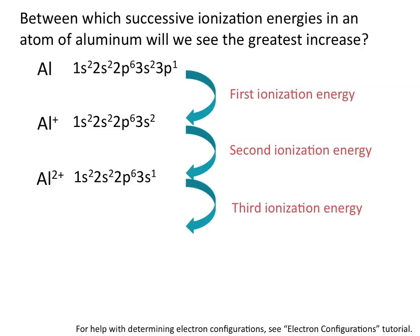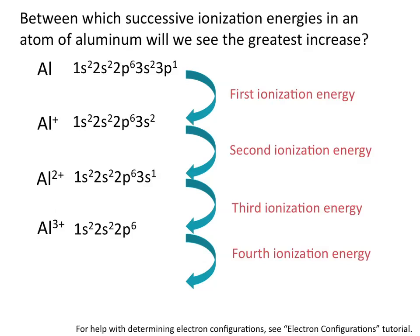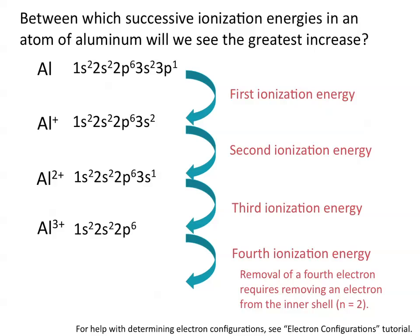The removal of a third electron will remove an electron again from the 3s shell. The electron configuration for the aluminum 3+ ion is 1s², 2s², 2p⁶. We've now removed all of our outer shell electrons. So between the third and fourth ionization energies is when we would see a sharp increase in ionization energy, because this requires the removal of an electron from an inner shell of aluminum.